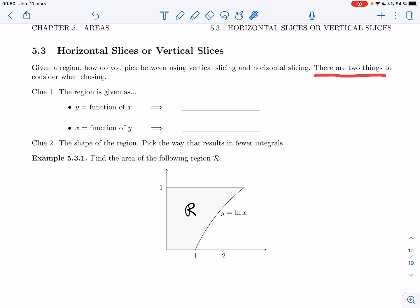there are two things to consider when choosing. First, clue number one, the region is given as y is a function of x, then that would be vertical slicing. If the function is x equals a function of y, then that is the setup for horizontal slicing.